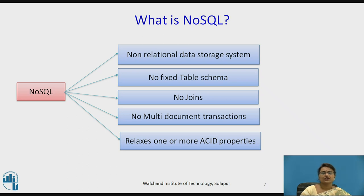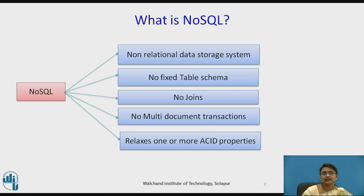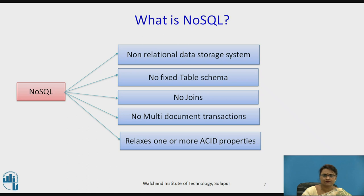Going into more detail: NoSQL is a non-relational data storage system with no fixed table schema. Because of no fixed schema, it does not easily handle join operations — so no join operations are present. No multi-document transactions are provided, and it totally relaxes the ACID properties.